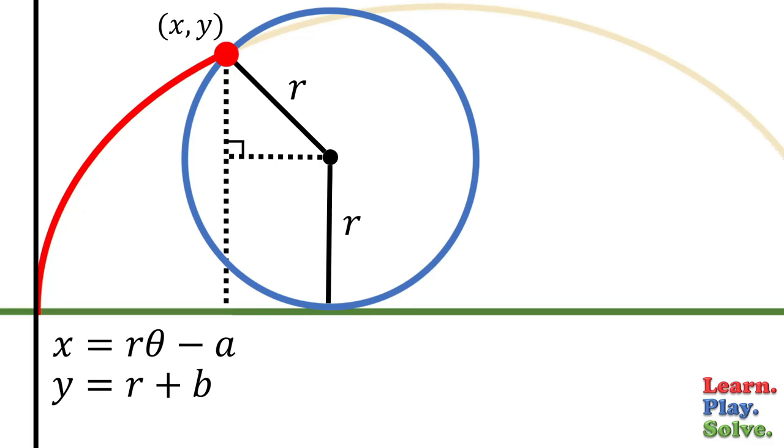We now have a set of parametric equations. The parameter in this case is theta. But what about a and b?